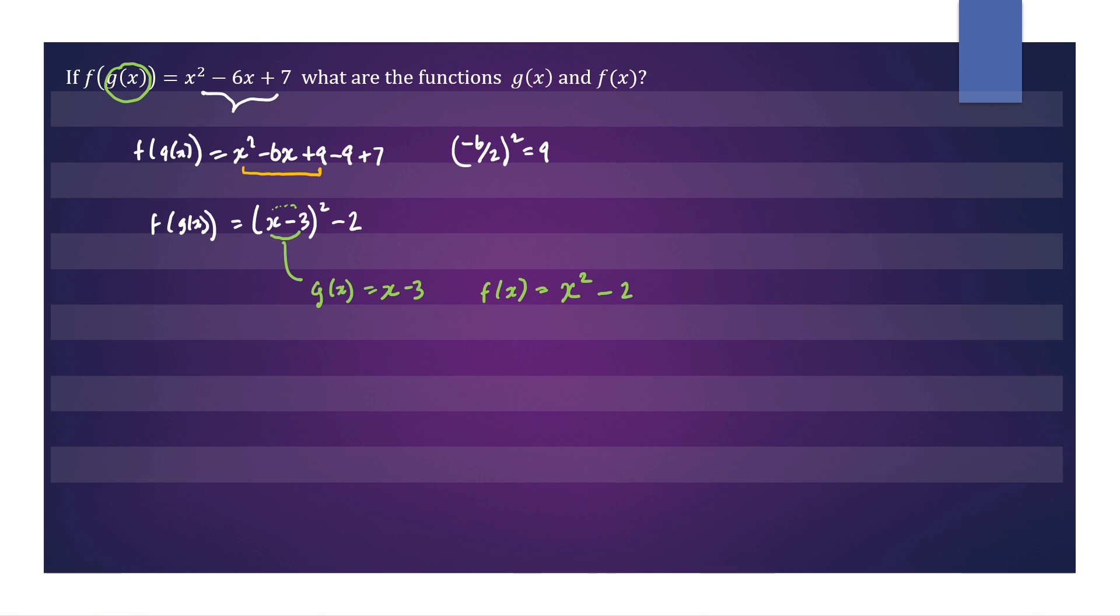So this is your answer, but we should check it by doing the composite again. So we have f(g(x)). So this is telling us to put our g function inside the f function. So we take our g function and we substitute back in here. So that will give us x minus 3 all squared minus 2. So it looks correct.